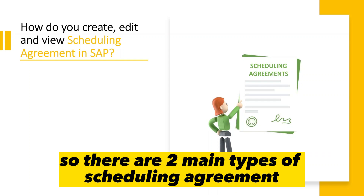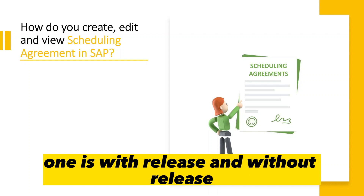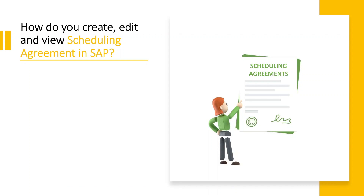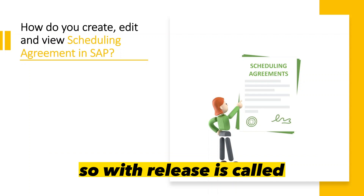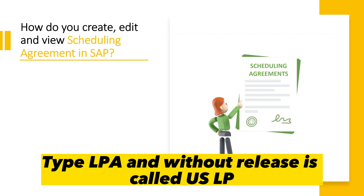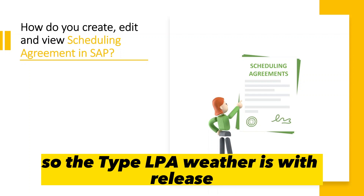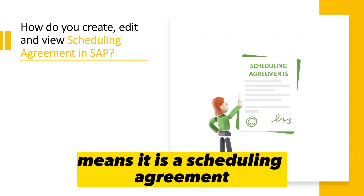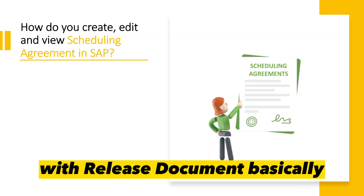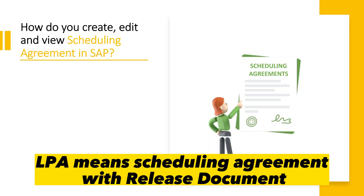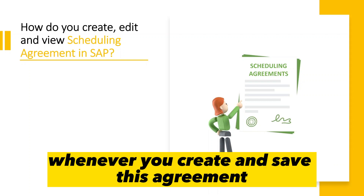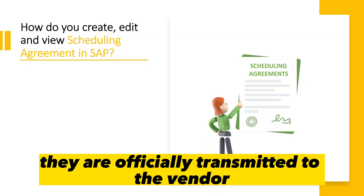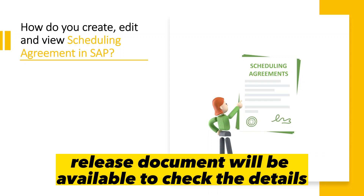There are two main types of scheduling agreement: with release and without release. With release is called type LPA and without release is called LP. LPA means it is a scheduling agreement with a release document — whenever you create and save this agreement it is officially transmitted to the vendor, and the release document will be available to check the details.